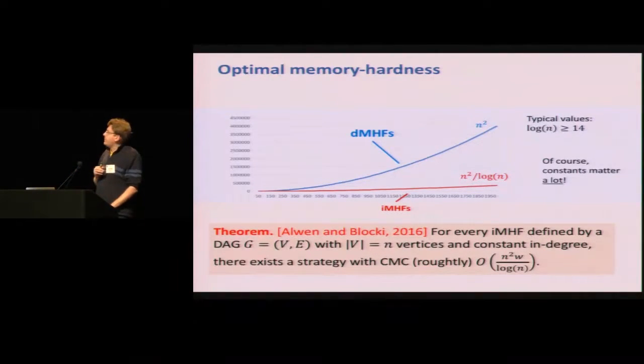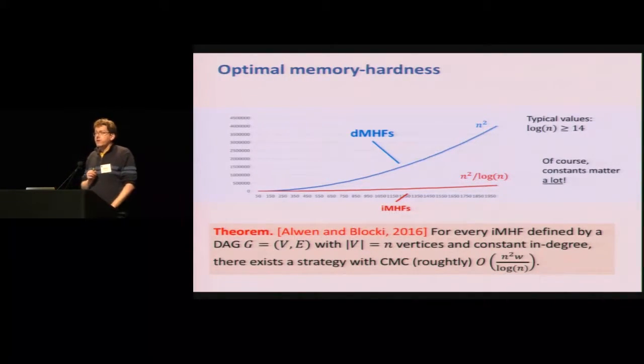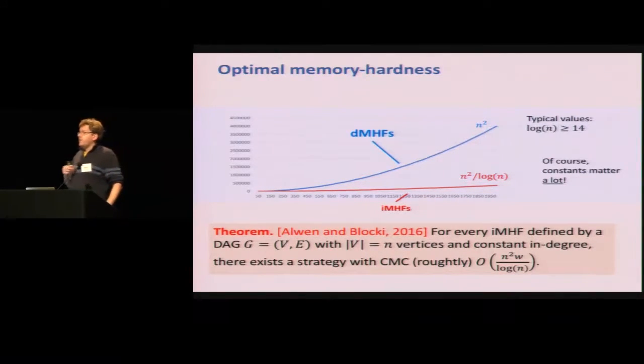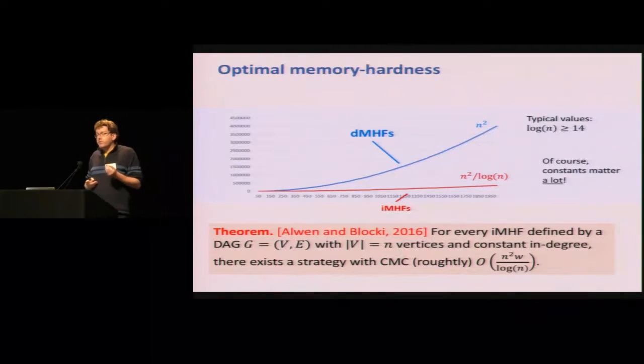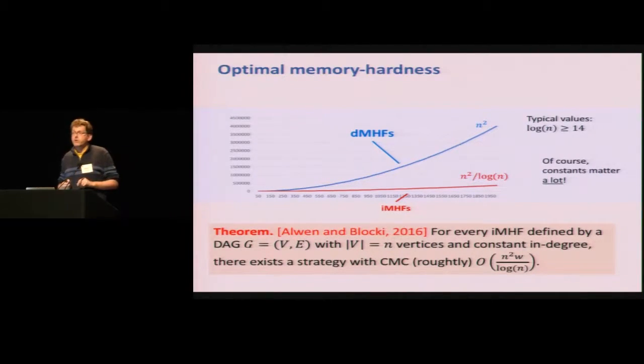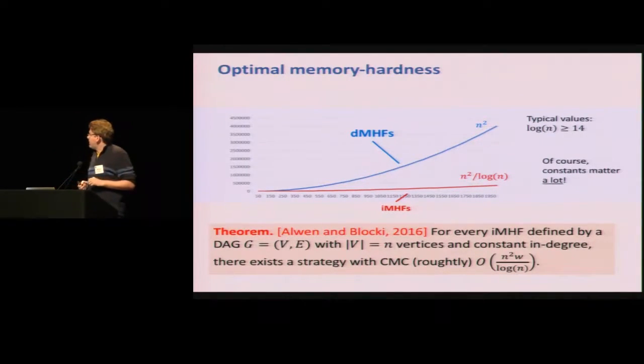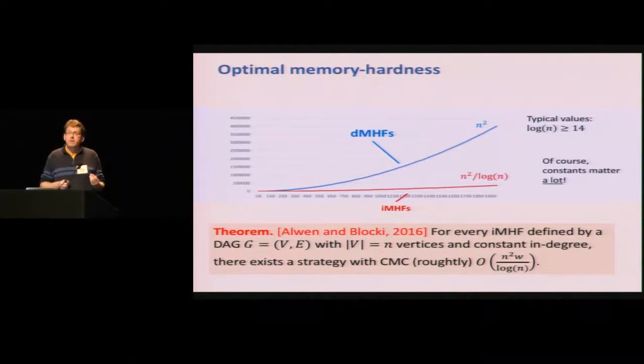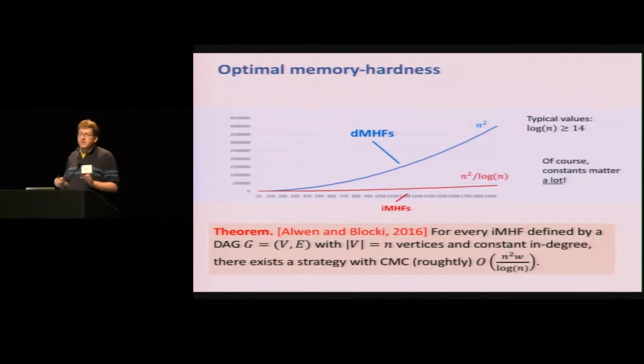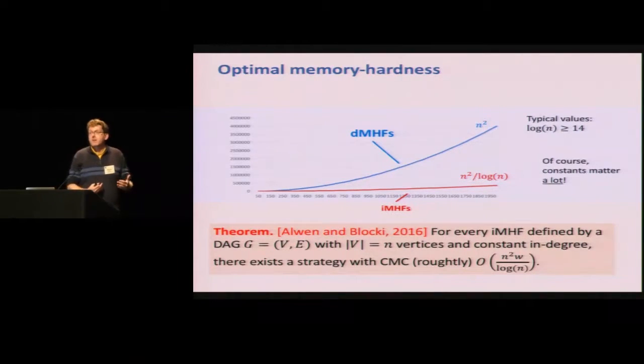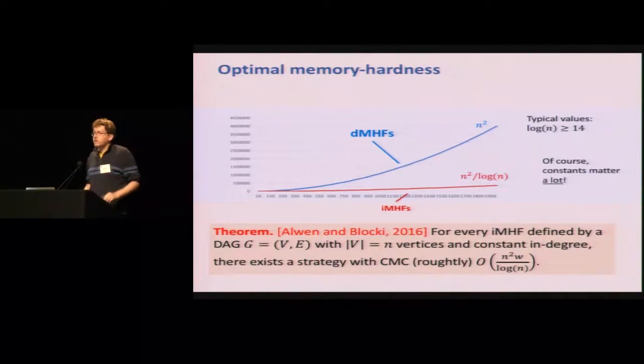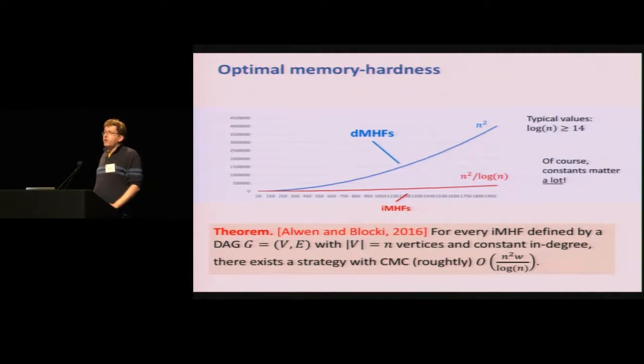Now, the important point here that was already addressed by Jeremiah is that this shows a separation between data-dependent memory hard function and data-independent ones. So by a result by Jeremiah and Joel Alvin, we know that for every data-independent memory hard function, there exists a strategy that allows you to evaluate it with cumulative complexity, which is roughly n squared times w over log n. Whereas here, we prove something of the order n squared times w. So there is a log n gap that is going to fall away. Of course, we have to be honest here. Constants here matter. And a log n and a constant factor might end up being the same for reasonable n's. But at least asymptotically, you see that the difference can be substantial. And you know, with a similar constant, you have to be careful about that, because log n can be very large for reasonable parameters.